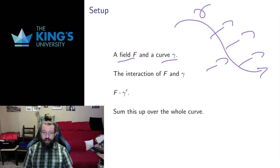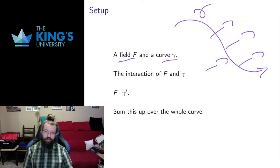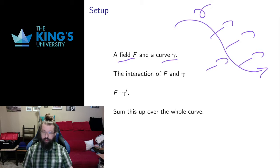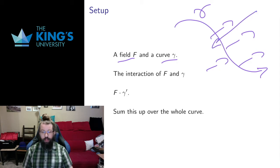I want to talk about the interaction of the field and the curve, and this is a pretty natural thing to think about. If my field is force — gravitational force or electromagnetic force — then it's the force as you go along the path, the force acting on something. It could be the force moving something, it could be the action, the force causing motion, or it could be something going against a force — your path going into the force, looking at how much work you have to do to work against the force.